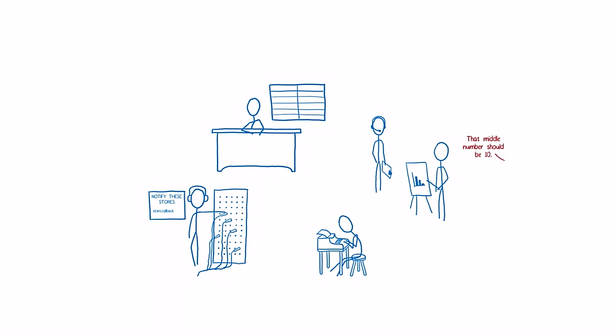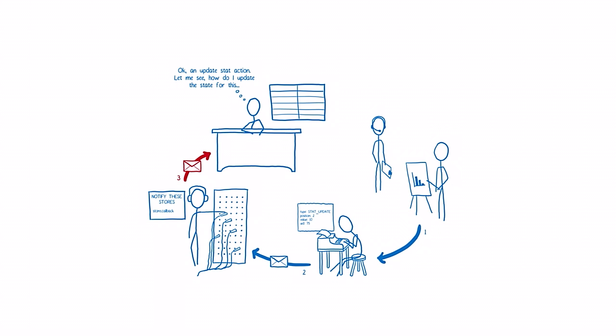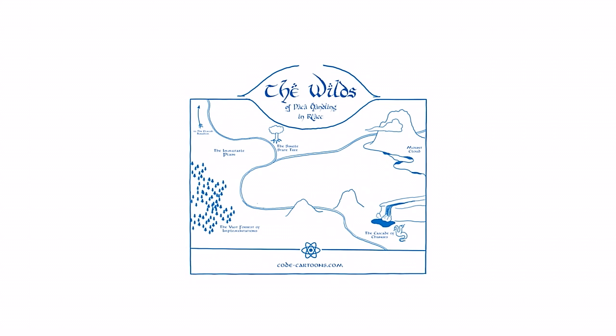Now that everything's wired up, let's take a look at how the data flows when a user interacts with the site. The user asks the view to change something. Then the view goes to the action creator and tells it what action it needs. The action creator creates that action and passes it along to the dispatcher, who passes it along to the store — or stores, since you can have multiple stores in Flux. Each store thinks about whether it cares about this kind of action. If it does, it changes the state, lets the container view know, the container view asks for the updated state, gets it, and passes it down to the presentational view below it.